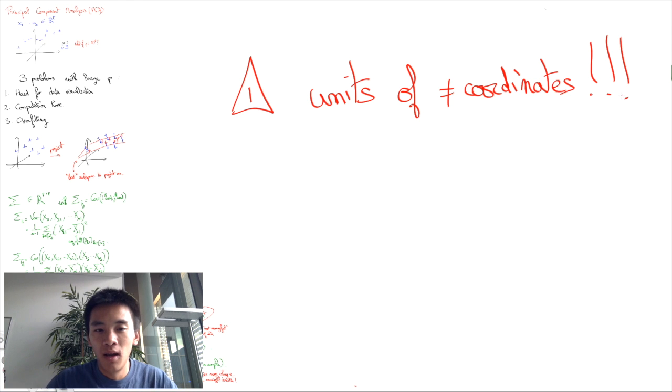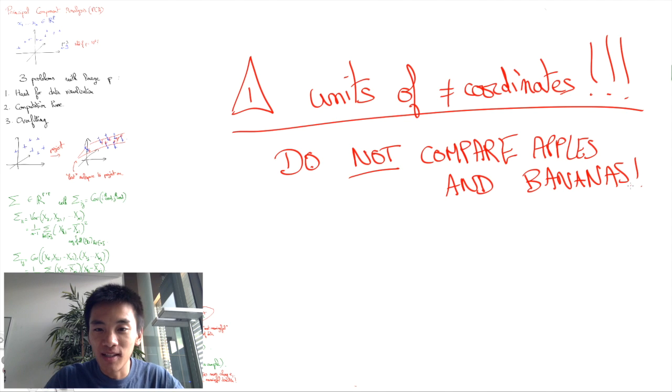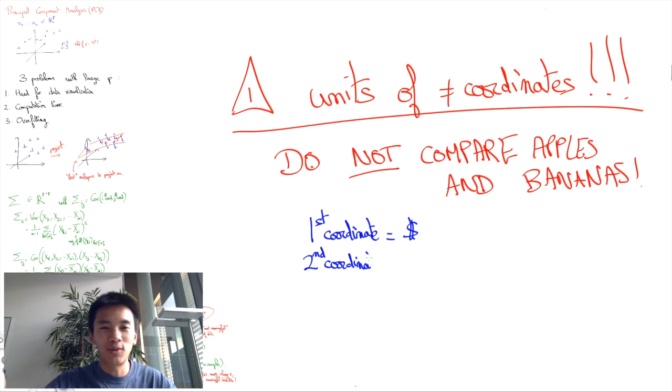In particular, you should not be comparing apples and bananas. The first coordinate should not be inputs in dollar units while the second is a number of casualties and the third is the number of computers out there.